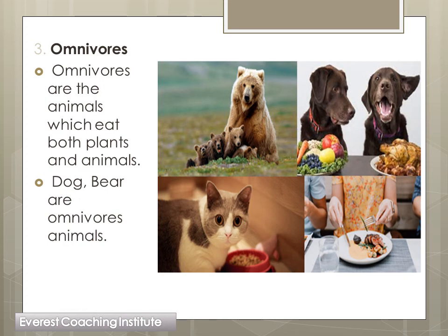Look at the picture I have put here. If you carefully see this picture, these are dogs. In front of them there are plant products and animal products - meat. One dog is happy with the meat, and the other dog has food products and plant products on the plate. So it means these animals eat both things - plant products and animal products. Dogs eat both, so they are omnivores.